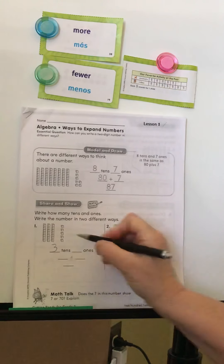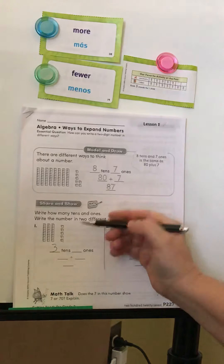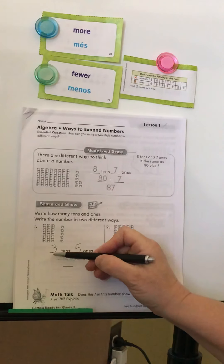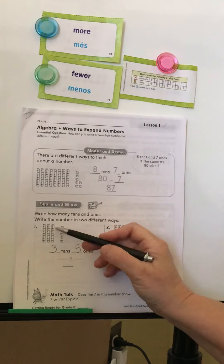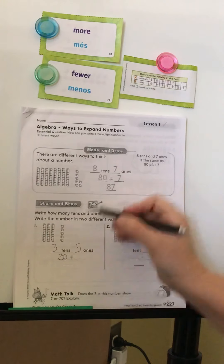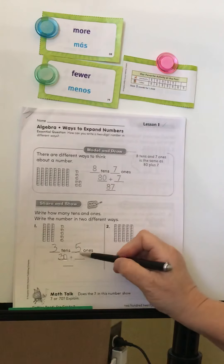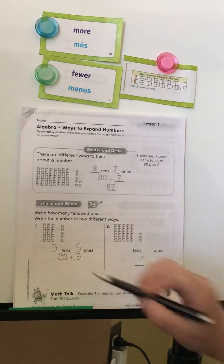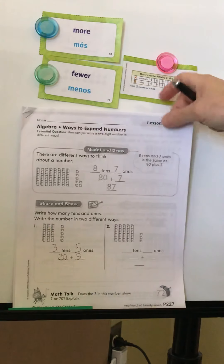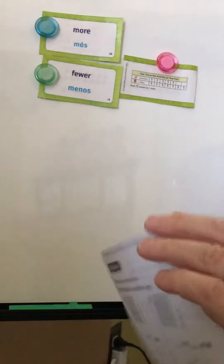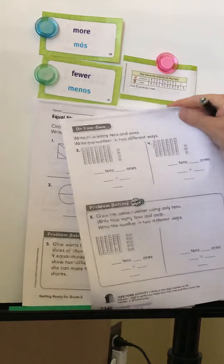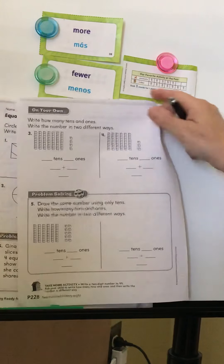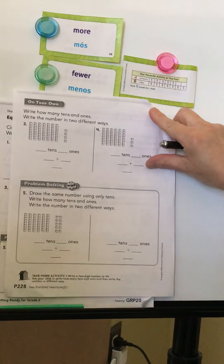Now you do the same thing. Count your tens: one, two, three tens. Count your ones: one, two, three, four, five ones. Three tens is ten, twenty, thirty — so write thirty. Plus five ones is thirty-five. Write that there. Number two is the same, so do that one on your own.